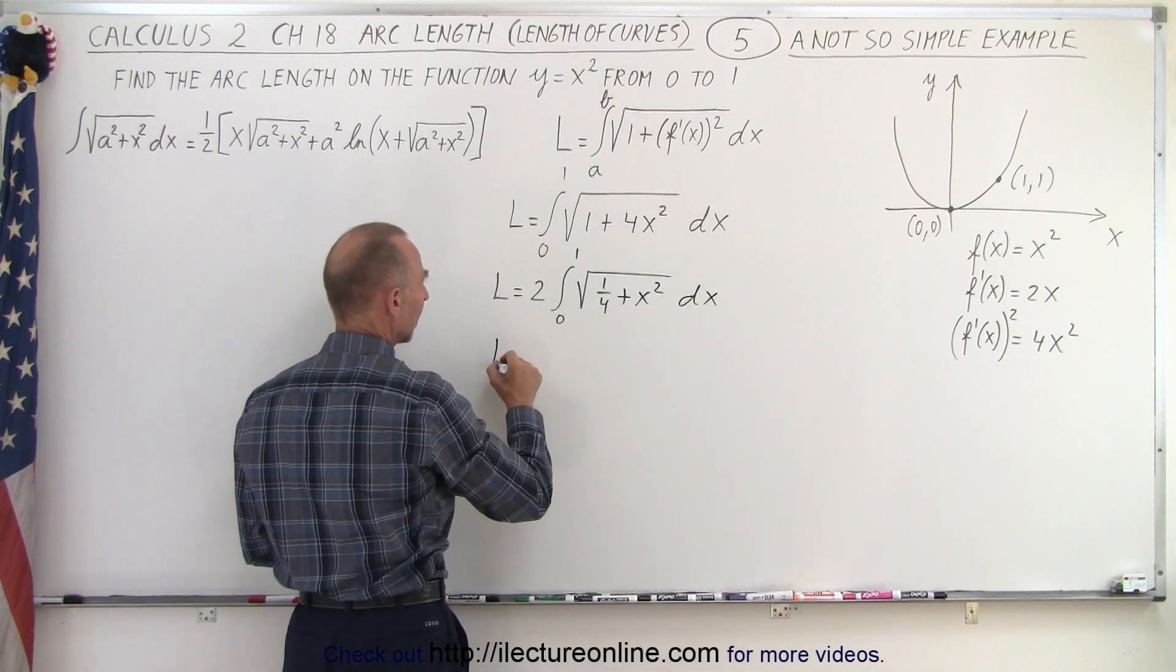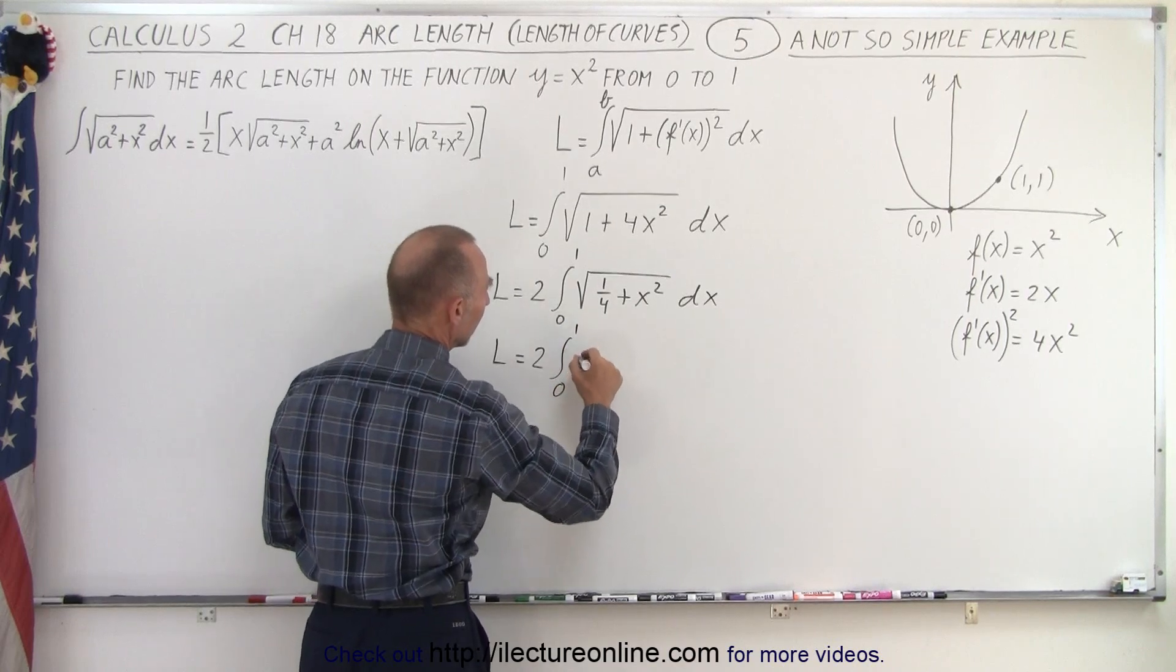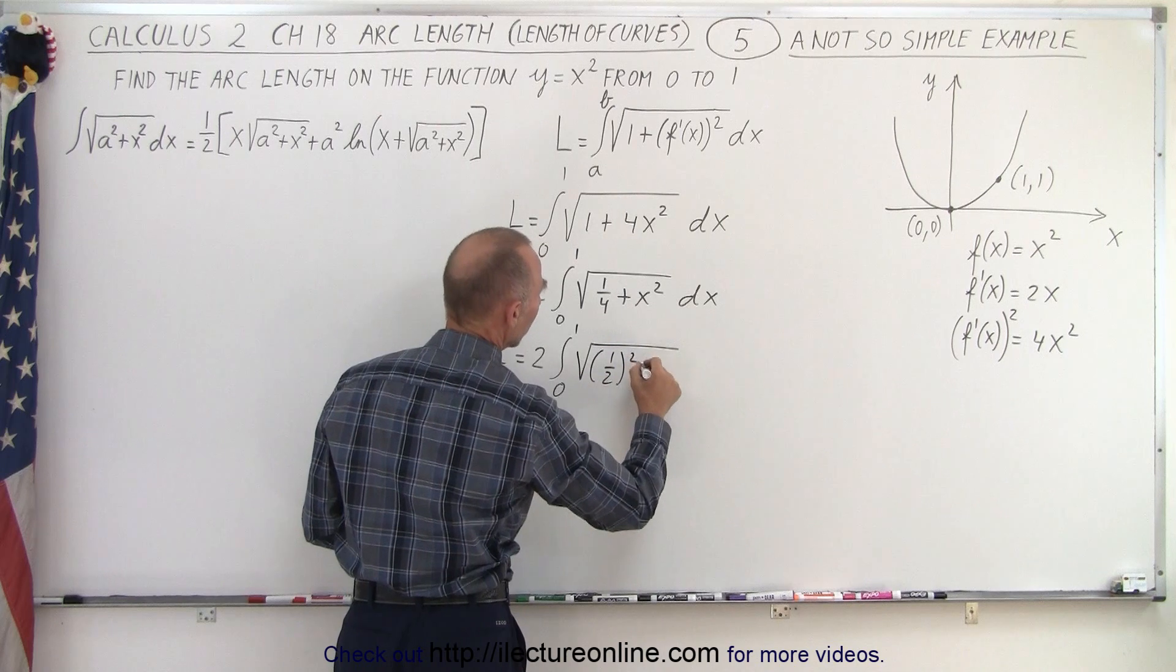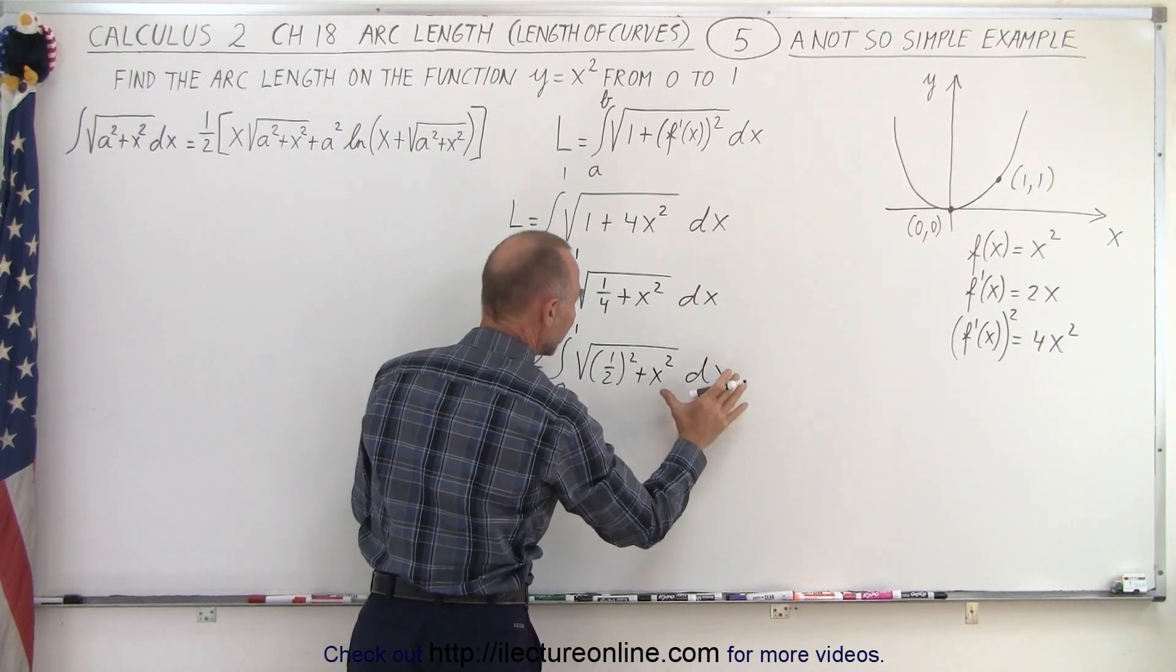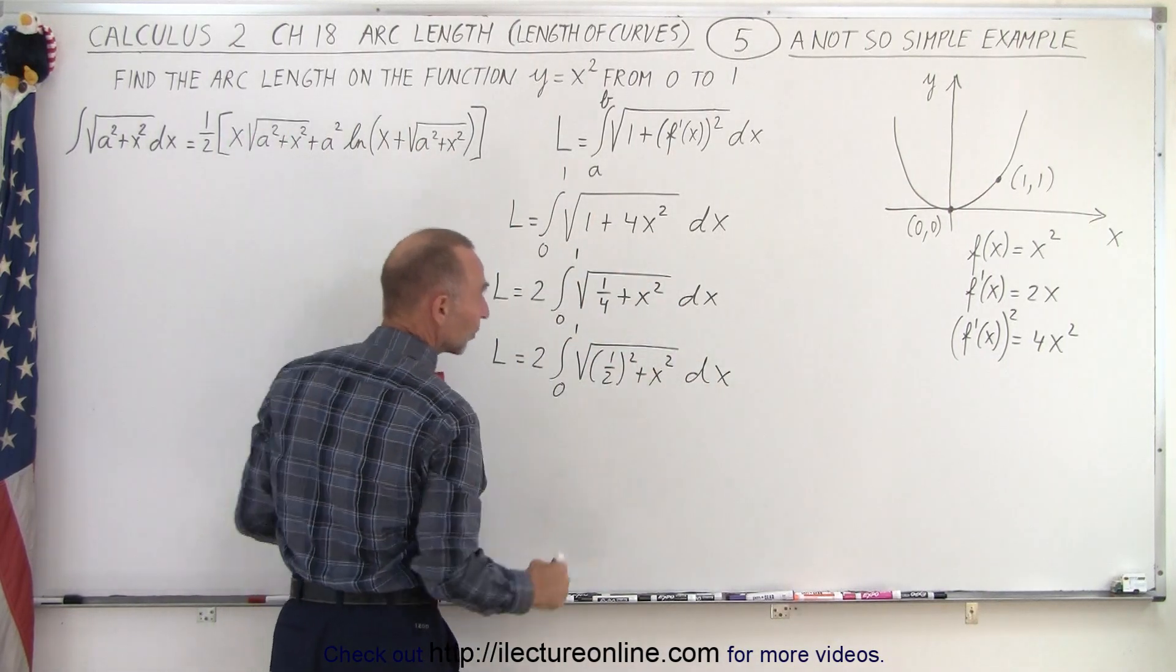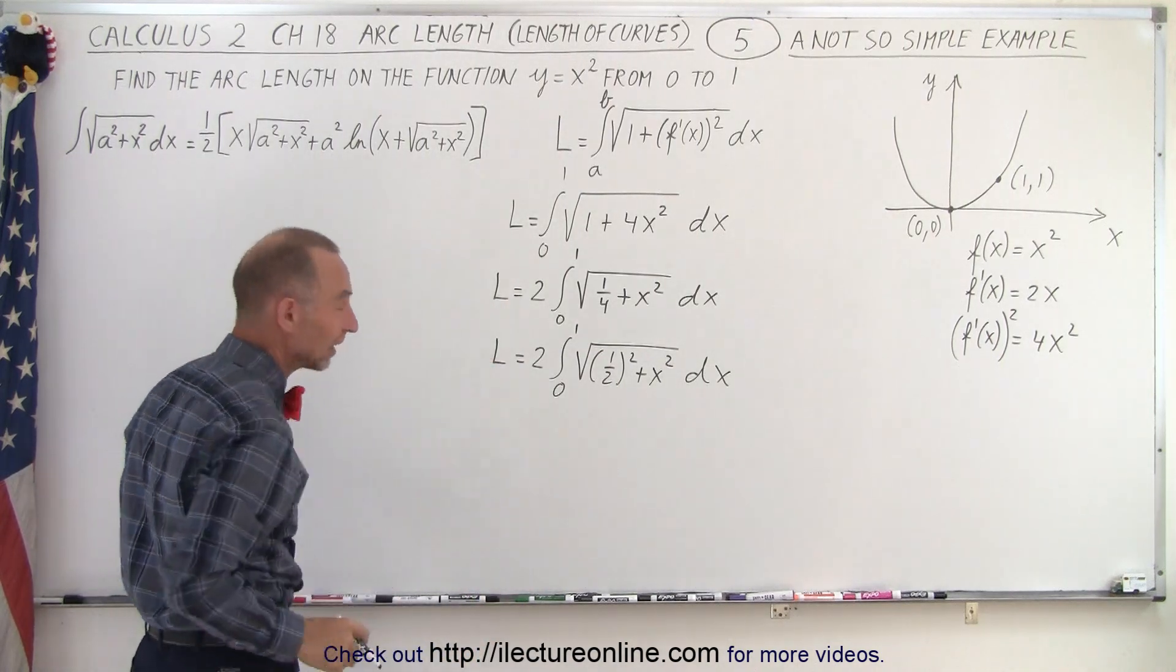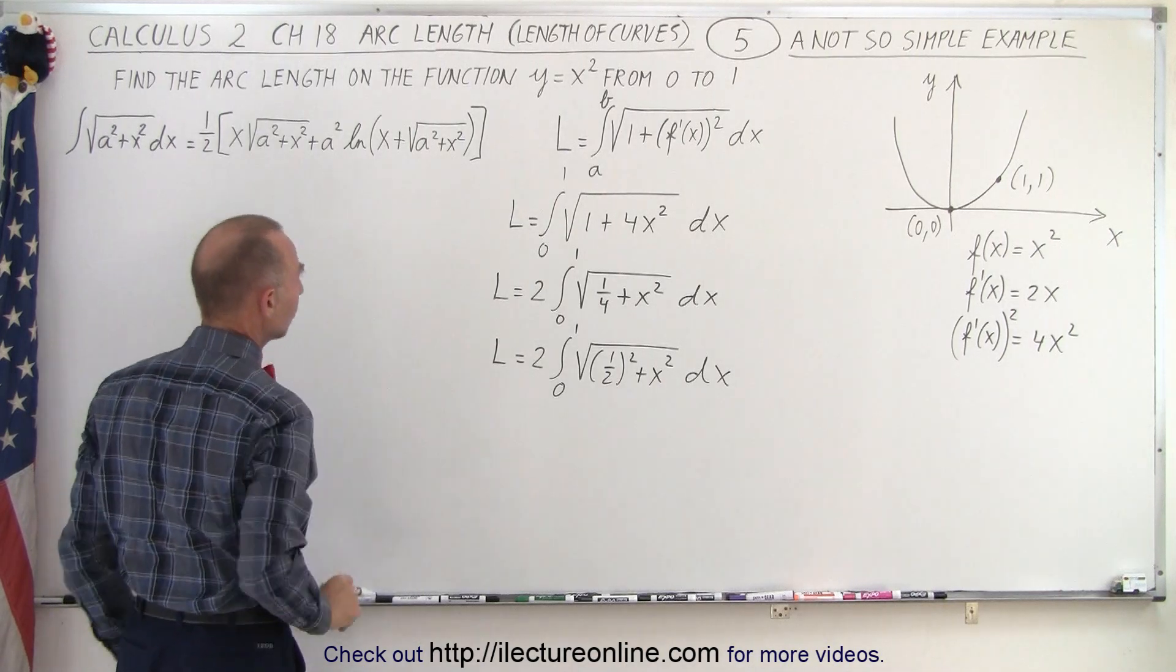And then if we write it like this, where L is equal to 2 times the integral from 0 to 1 of the square root of (1/2)² plus x squared times dx, now we have it in the exact same form as we have over here. A is 1/2 and we have the x, both of them are squared. And now we realize, okay, this is a very difficult integral to integrate. And here we have what that integral is equal to.